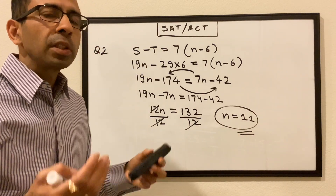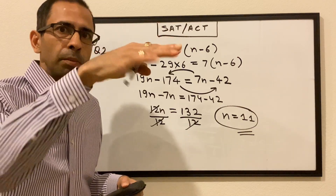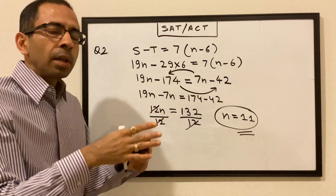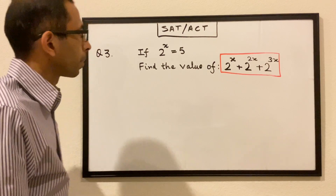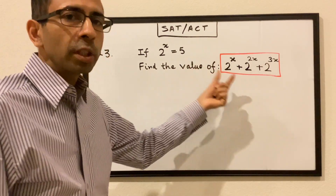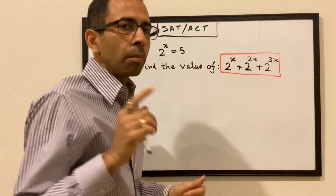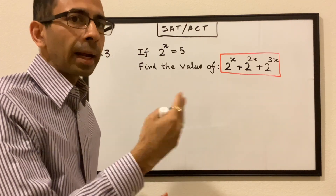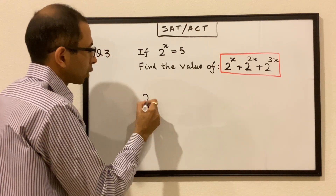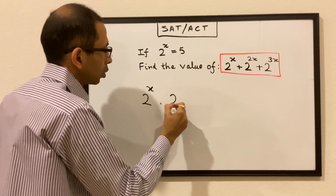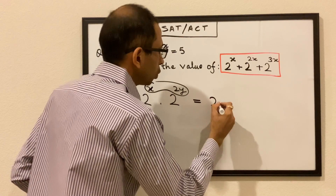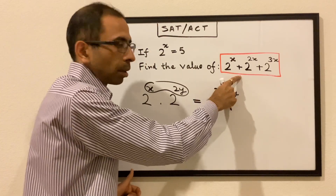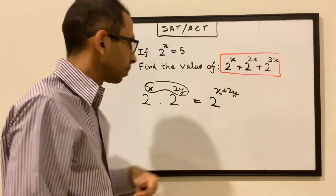We used the definition of average — total sum divided by number of data points — for all three given conditions, wrote an equation in terms of n, and solved for it. Now for the third question: if 2 to the power of x is 5, find the value of 2^x plus 2^2x plus 2^3x. A common mistake here is to try adding the powers, but we can only add powers when we are multiplying terms with the same base.